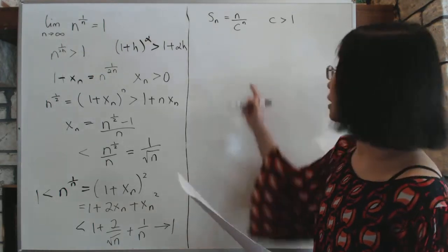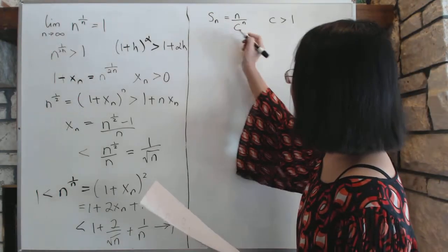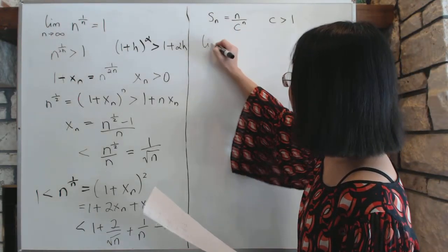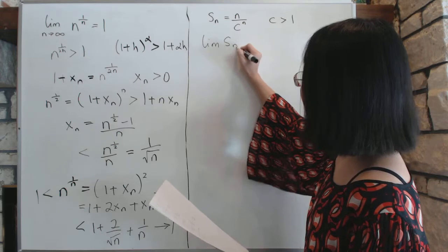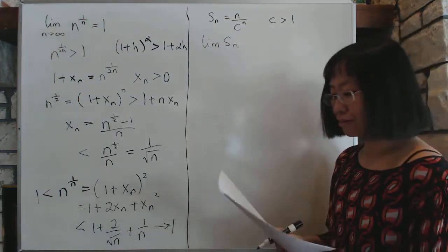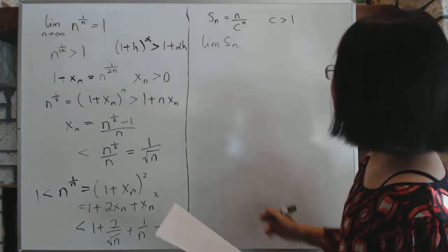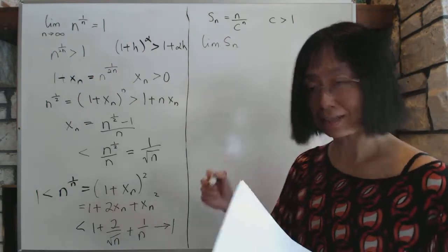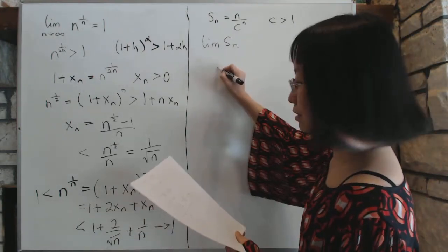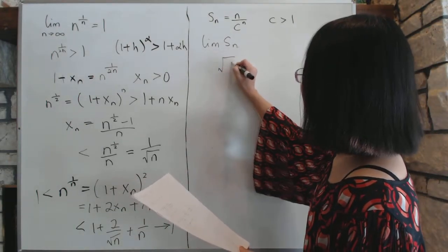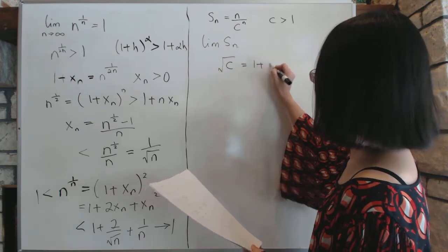If that is the case, we need to figure out what the limit of sn goes to. So what is the limit? So that's what we're looking for, limit sn. To find that, we have to pull these tricks, very similar, but this one has a slight twist to it. So to find the limit, you're going to define square root of c equal to 1 plus x.